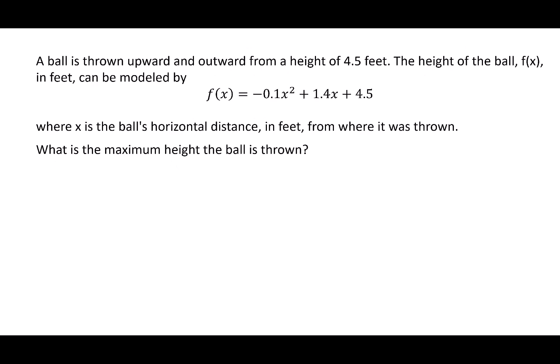Our next problem says a ball is thrown upward and outward from a height of 4.5 feet. The height of the ball, f(x), in feet can be modeled by f(x) = -0.1x² + 1.4x + 4.5, where x is the ball's horizontal distance in feet from where it was thrown. What is the maximum height the ball is thrown? Now, so let's start by really understanding what we're trying to figure out and what we know.